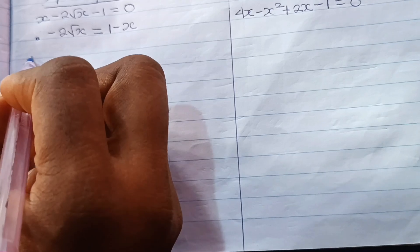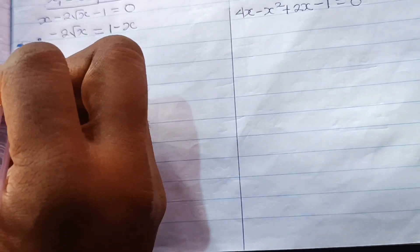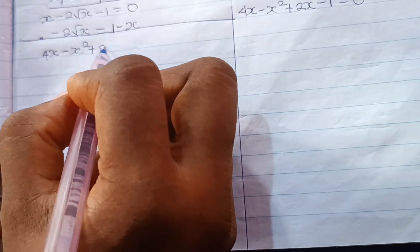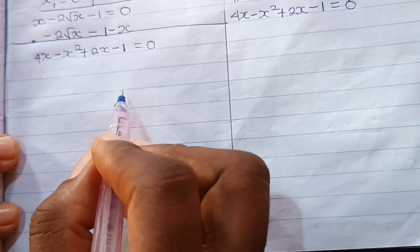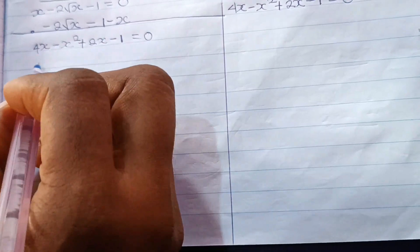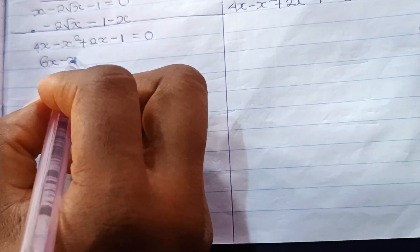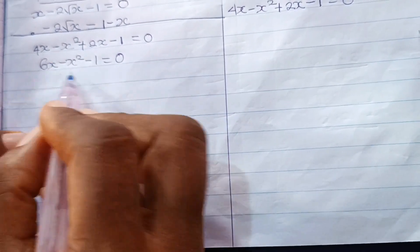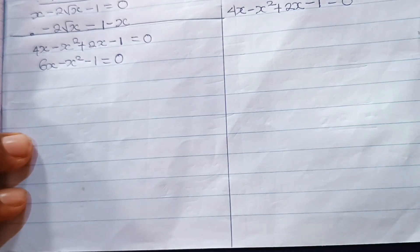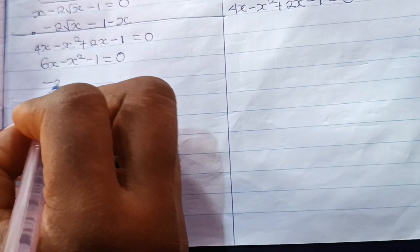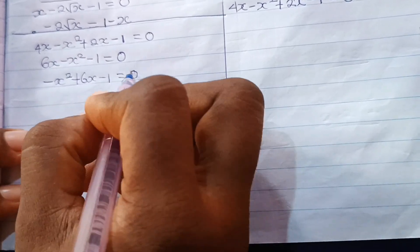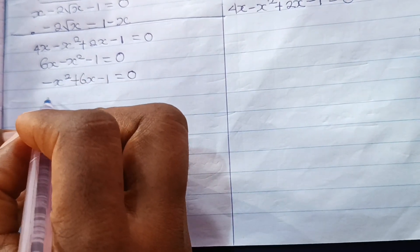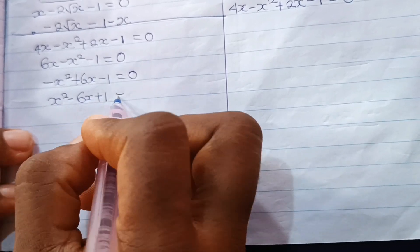So we have minus x squared plus 6x minus 1 is equal to 0. Because of the minus sign on x squared, let's multiply through by minus 1. We get x squared minus 6x plus 1 is equal to 0. Now we cannot solve this using the factorization method.